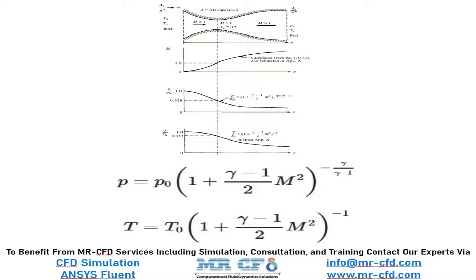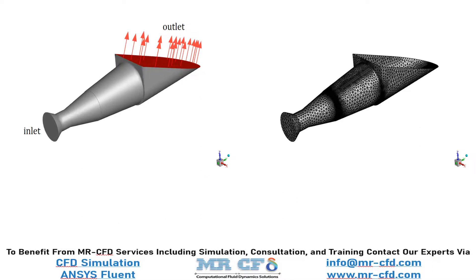The k-standard-epsilon model with a standard wall function is used to solve fluid flow equations and the energy model is activated. The ideal gas equation is exploited to calculate density changes in the computational domain. The geometry is designed in ANSYS Design Modeler and meshed in ANSYS Meshing. The mesh type used for this geometry is unstructured and has great accuracy in sensitive sections.